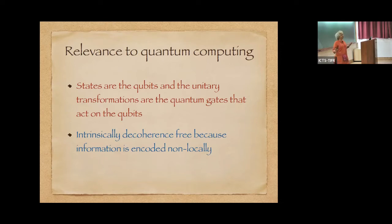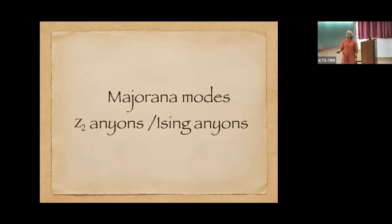The states are considered to be the qubits and the transformations are the unitary transformations that are the quantum gates that act on these qubits. And because it's basically how you exchange the parts is not important, it's only the final configurations that are important, it is intrinsically decoherence free. So with this background to what are non-abelian anyons,